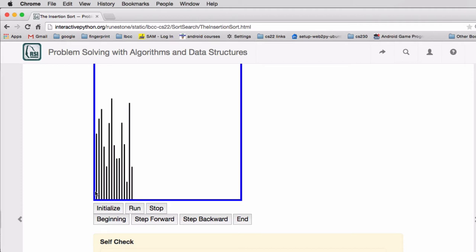In insertion sort, you'll see the beginning of the list starting to be sorted, and it's moving one more thing at a time into the already sorted area.